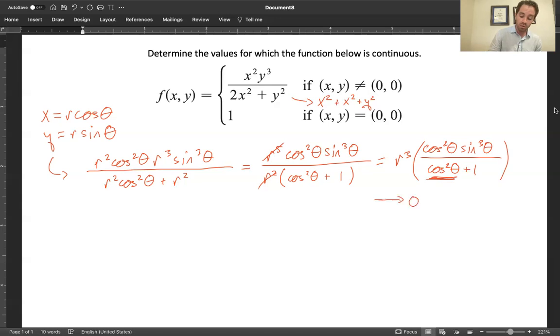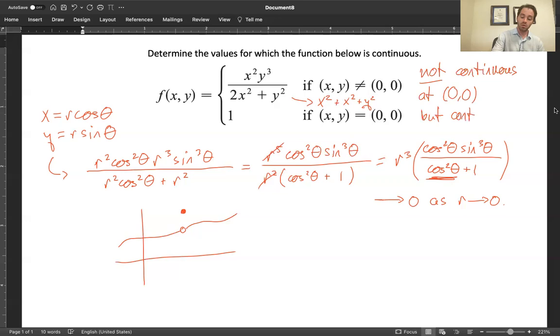What this implies is that this function is going towards the value of zero as x comma y heads towards zero comma zero, but then it arrives at the value of one. So this is like the one-dimensional case where you have a hole punched out of a function and it jumps up for one instant. This is like that, but in a two-variable case.